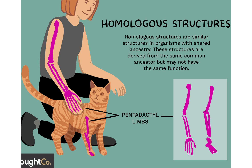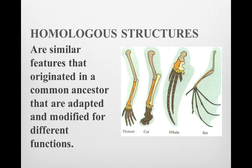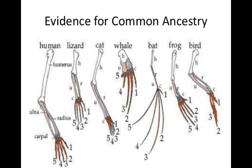Scientists interpret the presence of homologous structures to mean that all species showing them have arisen from a common ancestor, which then adapted to live in different environments. Even though the functions of these structures are totally different, their structural similarities indicate they come from the same evolutionary line and share a common ancestor. This goes back to the basic premise of evolution: common ancestry.